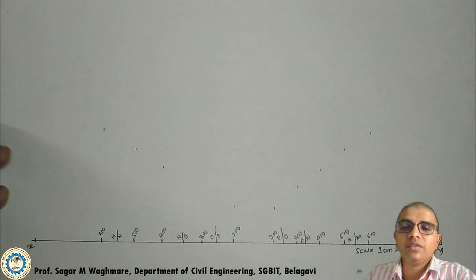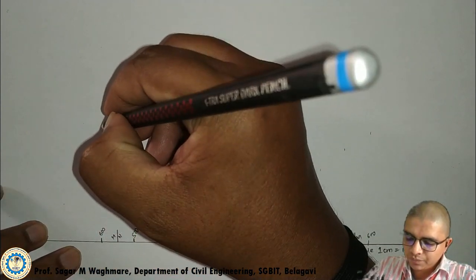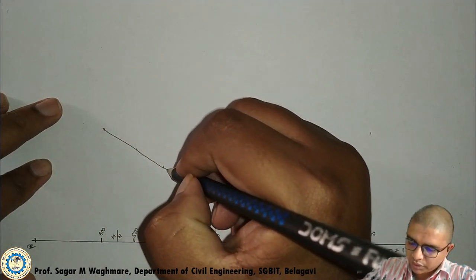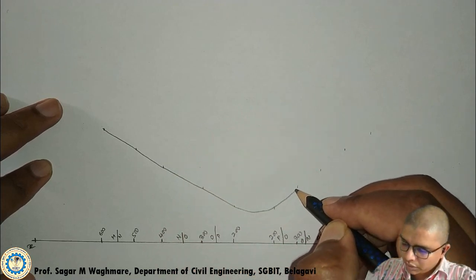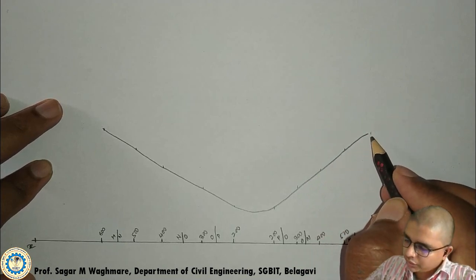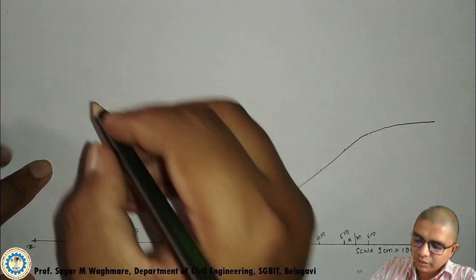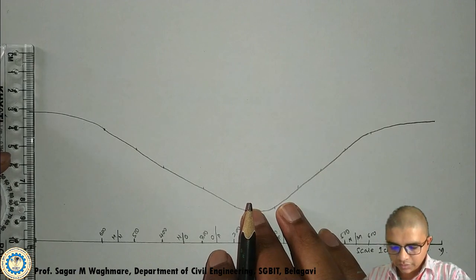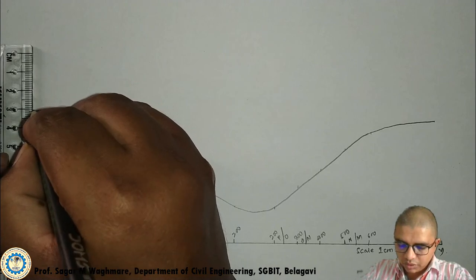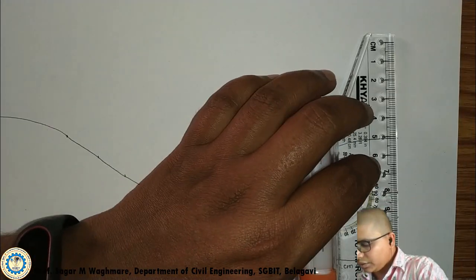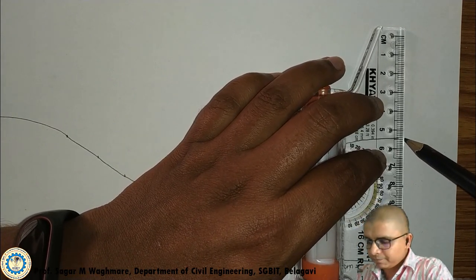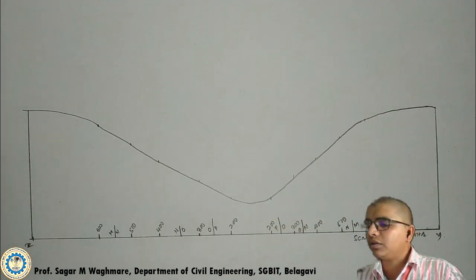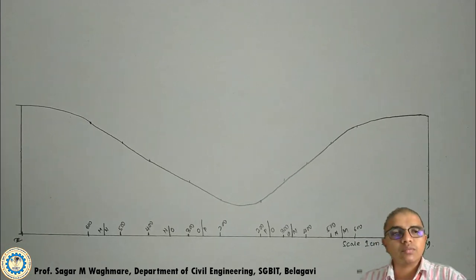Once all these points are plotted, the immediate next task is to join them. I will join them with a freehand drawing — in one smooth line, not zigzag. I will start from one corner, go slightly down at the valley, continue, and extend till the X point. Similarly, on the other side I extend till the Y point, joining both ends. My profile for this is now ready.